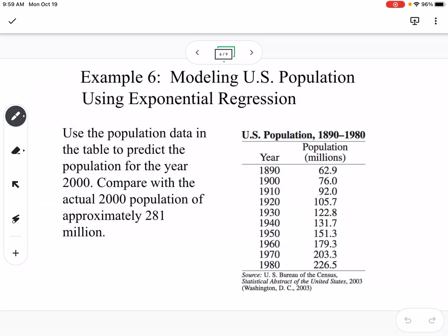The next thing is modeling using exponential regression. So we did this in the modeling project, but I want to give step-by-step instructions so you know how to do this. The easiest way is going to be to use Desmos. It says to use the population data in the table to predict the population for the year 2000. It says to use T equals 0 for the year 1890, and then to use T equals 1 for the year 1900, and so on. So each T value is going to represent 10 years.